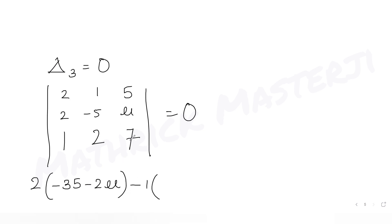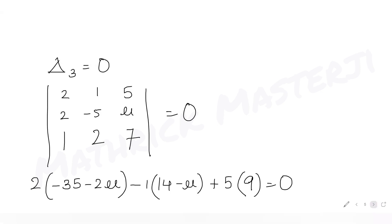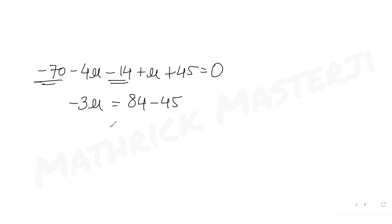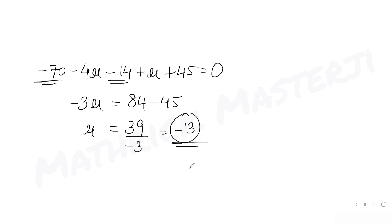Continuing the expansion: -70 - 4μ - 14 + μ + 45 = 0. Collecting terms: -70 - 14 + 45 - 3μ = 0, which gives -39 - 3μ = 0, so -3μ = 39, giving μ = -13. So we have λ = 17 and μ = -13.